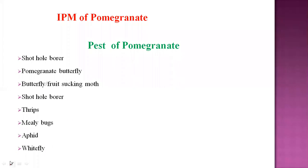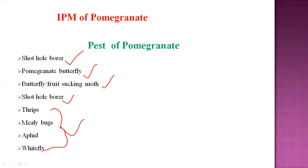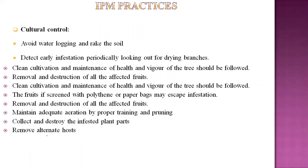The major pests that occur on pomegranate are: first, the shot hole borer; second, the pomegranate butterfly; third, the fruit sucking moth. Additionally, there are important sucking pests such as thrips, mealybugs, aphids, and whitefly. All these pests are very serious on pomegranate.